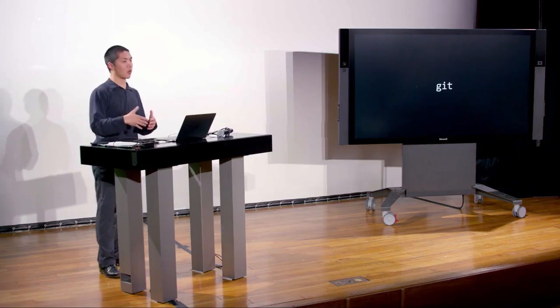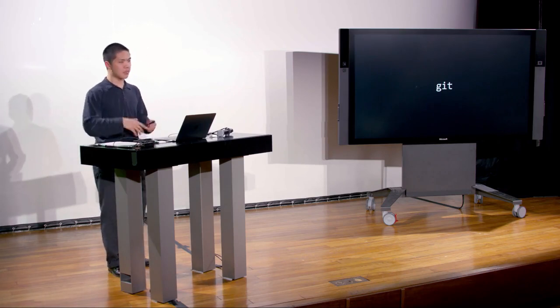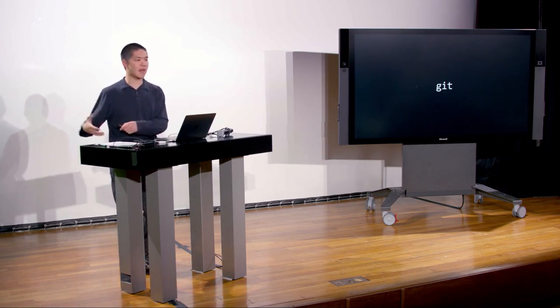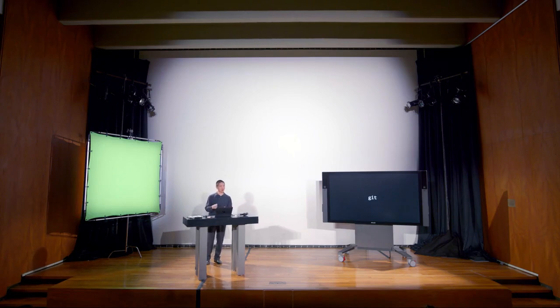The first topic we're going to talk about today as we approach the world of web programming is: when we're designing projects, how do we keep track of different versions of our code? How do we collaborate with other people? How do we make sure that if we make a change that doesn't work, we have an easy way to go back to older versions? All of that falls under the larger umbrella of version control. One of the most popular version control tools is Git, which we're going to use in this class and that people often use in industry.